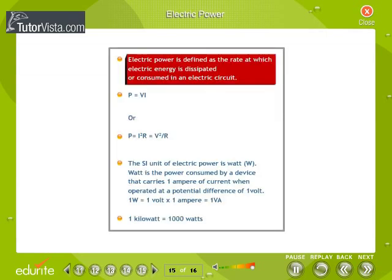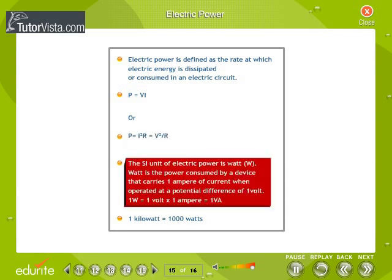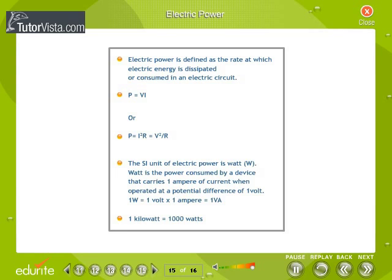Electric power: Electric power is defined as the rate at which electric energy is dissipated or consumed in an electric circuit. The power P is given by the equation P equals VI, or P equals I squared R equals V squared by R. The SI unit of electric power is Watt (W). Watt is the power consumed by a device that carries 1 ampere of current when operated at a potential difference of 1 volt. 1 Watt equals 1 volt into 1 ampere equals 1 VA. The unit Watt is very small. In actual practice, kilowatt is used which is a much larger unit. 1 kilowatt equals 1000 watts.